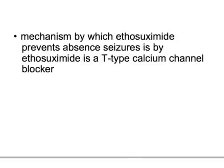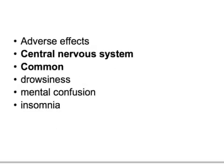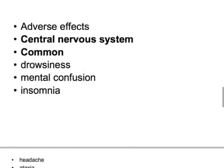The mechanism by which ethosuximide prevents absence seizures is that it is a T-type calcium channel blocker. This is why it is very helpful in treating patients with absence seizures. Remember: it is a T-type calcium channel blocker — this is a very important mechanism of action.